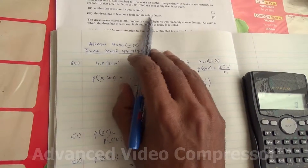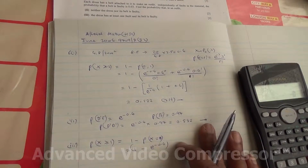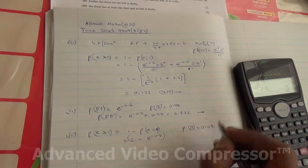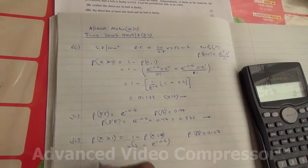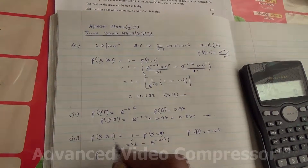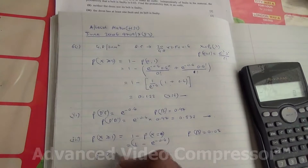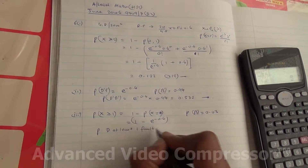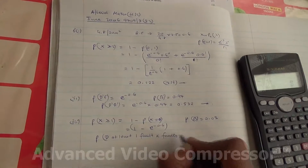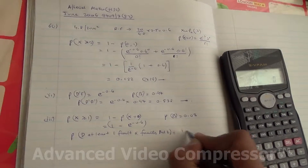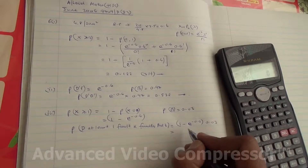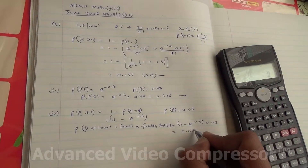And then its belt is faulty. The probability of getting a faulty belt is 0.03. So these two are occurring independently again. Therefore, the probability that there is at least one fold in the dress and a faulty belt is going to be 1 minus e to the power of minus 0.6, times 0.03.